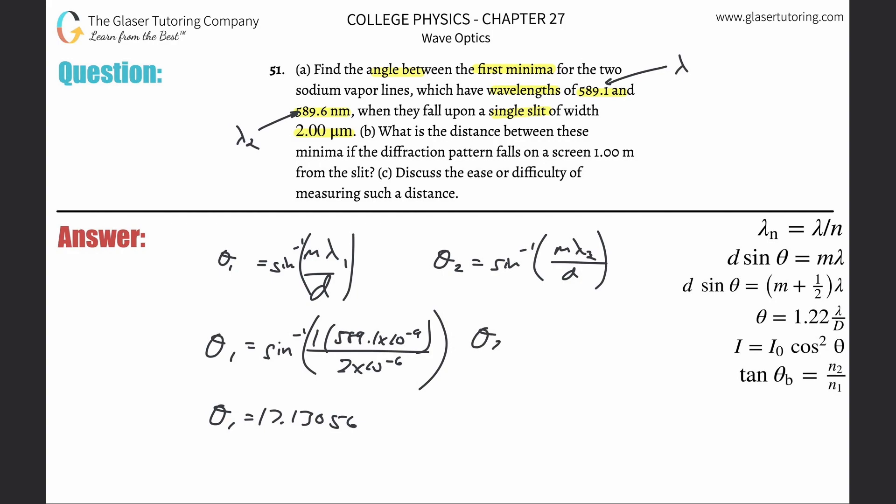Theta 2 will equal inverse sine of 1 times 589.6 times 10 to the minus 9, all over 2 times 10 to the minus 6. Plug that in. Just going to go back and tweak that 589.6 this time. So this is 17.14554.